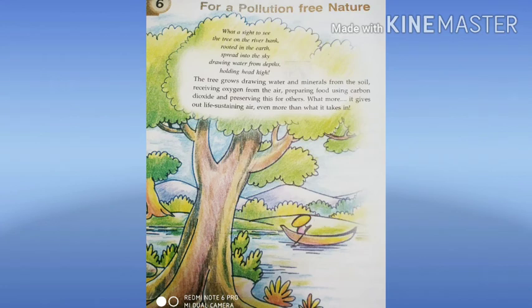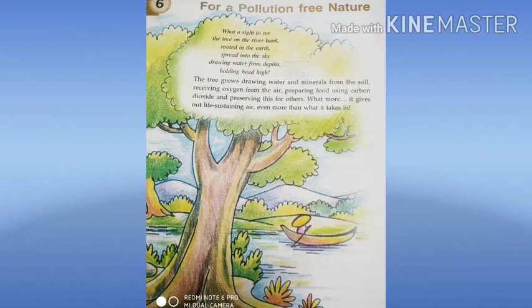Hello children, today we will start our sixth unit: 'For a Pollution-Free Nature.' On the screen you can see a picture of a seashore. Plants are the kitchen of earth because the green plants prepare food for the whole earth. We know that green plants carry out photosynthesis.